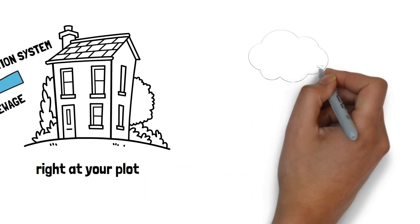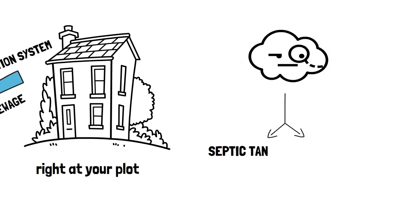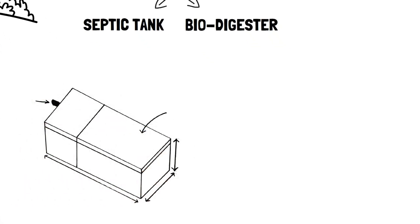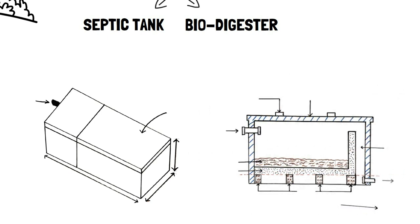After doing extensive research, I'm pretty sure you've come across septic tanks and biodigesters. So in this video, we'll talk about the biodigester, which is an alternative on-site sanitation system to the septic tank.